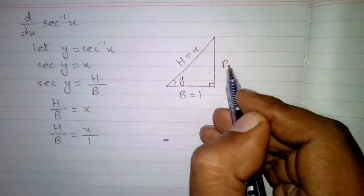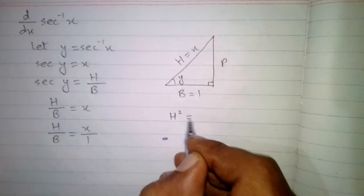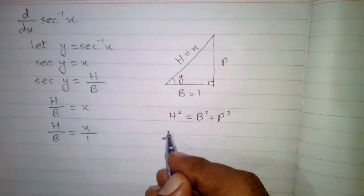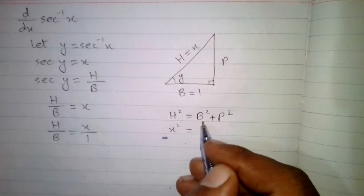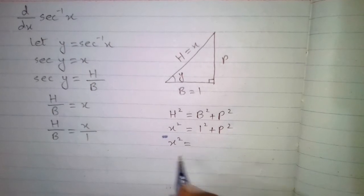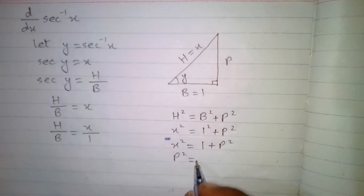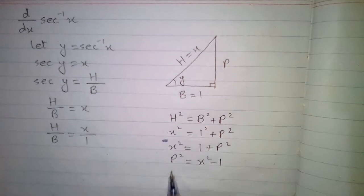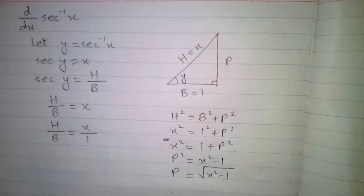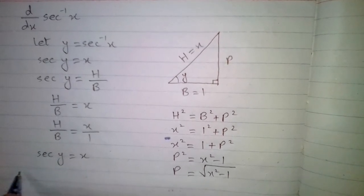Now we can find the value of perpendicular by Pythagoras theorem. We know that hypotenuse square equals base square plus perpendicular square. Hypotenuse is x, so x square equals 1 square plus P square, giving us P square equals x square minus 1, so the value of perpendicular is the square root of x square minus 1.